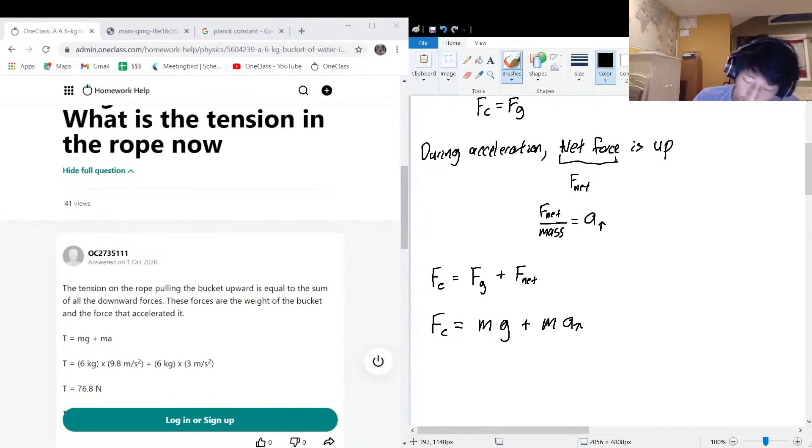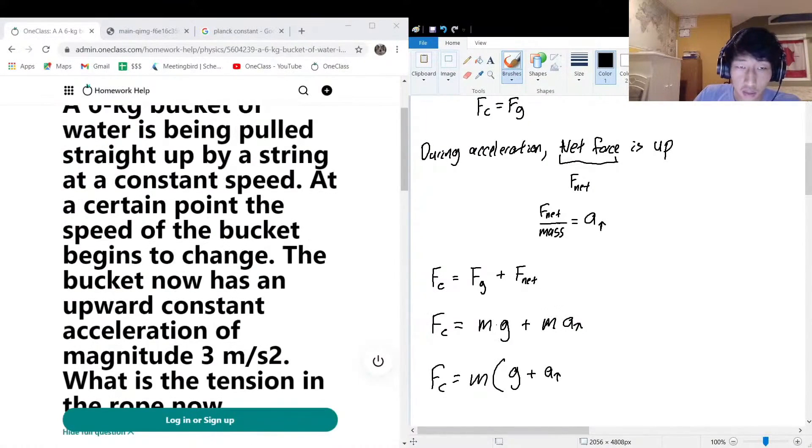Because that's the actual acceleration that the cord needs to supply—it needs to supply an upwards acceleration to counteract the acceleration down due to gravity. That's why we have the g as well as the actual acceleration upwards, which was given as 3 m/s². Okay, so let's substitute in the numbers. We had a 6-kilogram bucket of water, and we're going to assume that nothing spilled out and changed the mass.